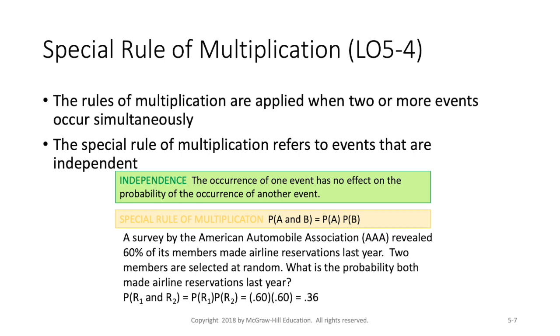Let's look at the rules of multiplication. And the rules of multiplication are applied when two or more events occur simultaneously. And so first we'll look at the special rule of multiplication. And here our events are independent. And what does this independence mean? It means that the occurrence of one event has absolutely no effect on the probability of the other happening at all.